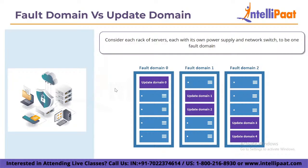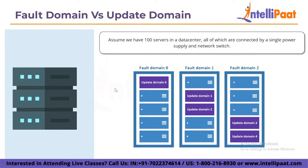You may wonder why such grouping is necessary — it is to eliminate a single point of failure. Assume 100 servers in a data center are all connected by a single power supply and network switch. If that power supply or network switch fails, all 100 servers fail. To avoid this, each server rack has its own power supply and network switch. Assume each rack contains 10 servers — if the power supply or switch in one rack fails, only 10 servers are affected, while the remaining 90 servers in the other 9 racks are unaffected. By organizing servers into separate racks or fault domains, we avoid a single point of failure.